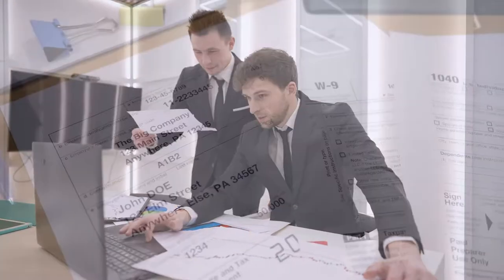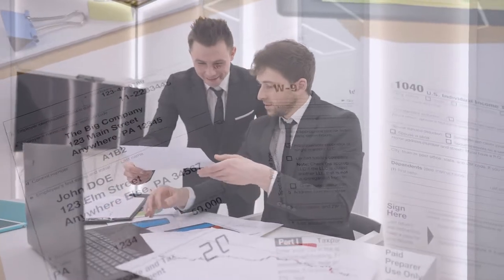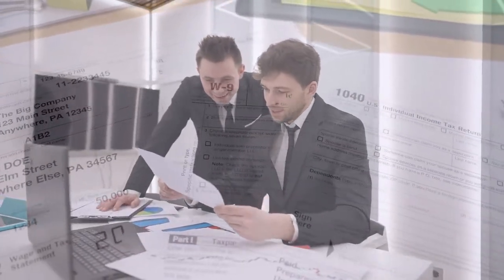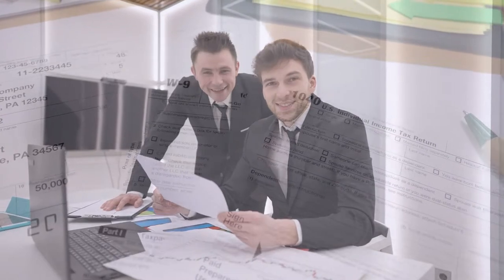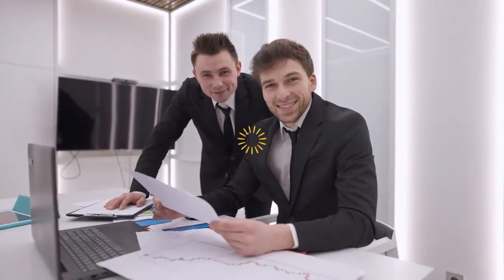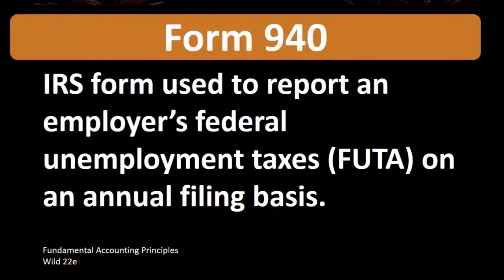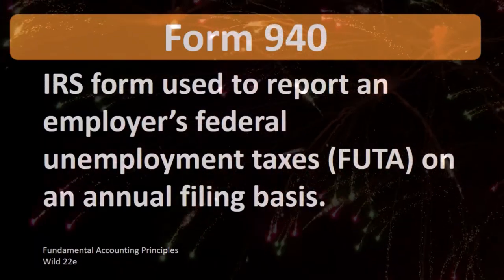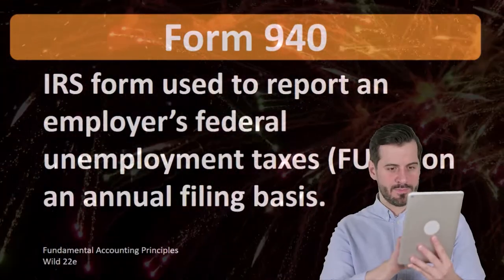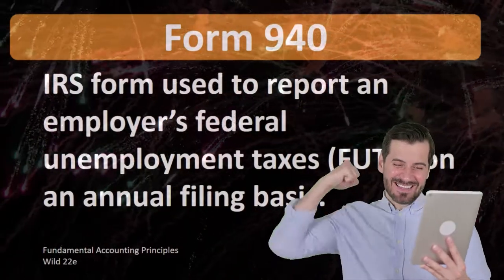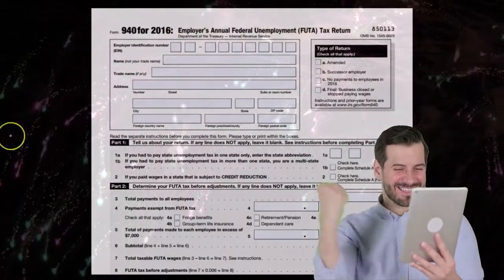The form is filed annually rather than quarterly. The 941s report medicare, social security, and federal withholding on a quarterly basis. The 940 is filed at the end of the year and is usually for a much smaller amount, because the federal unemployment tax is generally far less in total.